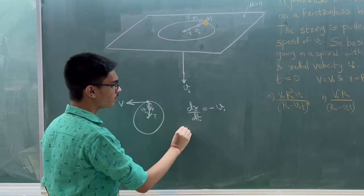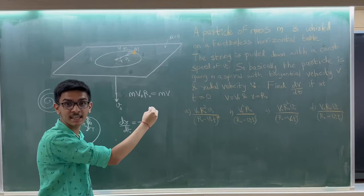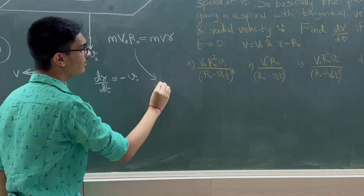So they said that at t equals 0, the tangential velocity is v₀, the radius is r₀. So I will write m·v₀·r₀ is equal to m·v at tangential velocity at any instant into radius at that time. So here I get the equation: v is equal to v₀·r₀ divided by r.